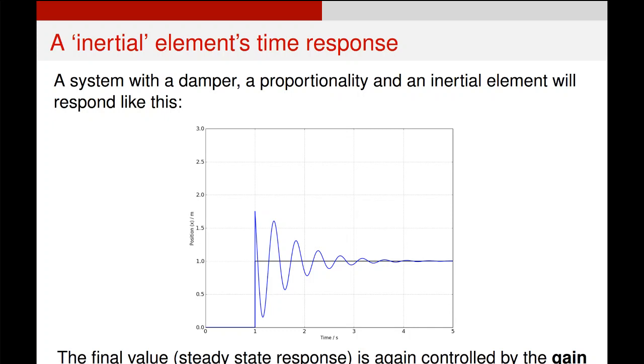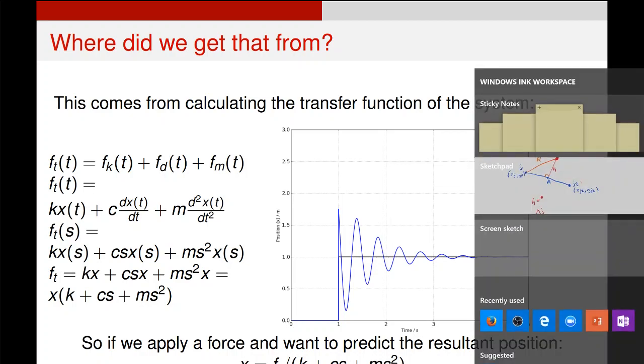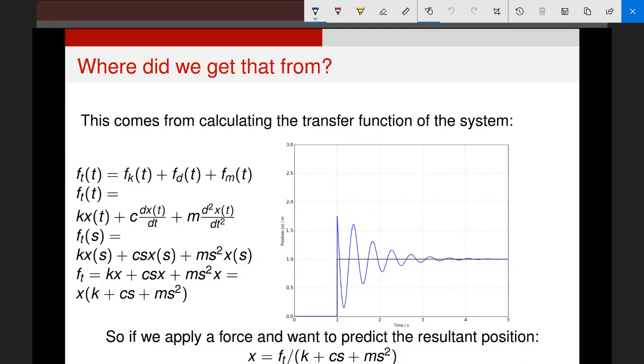And once again this has a time constant. The important thing here is that we've got some kind of overshoot over time. Now the mathematics of this are slightly more complicated, but what you can hopefully see is we're actually doing exactly the same thing as we saw in the previous video. We're assuming this is a linear time invariant system which means we can describe it as a sum of a proportional, a damper, and an inertial element.